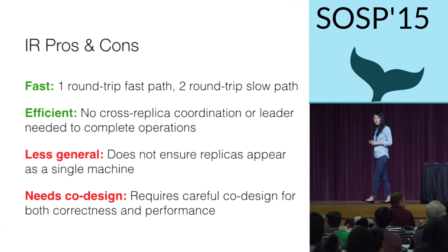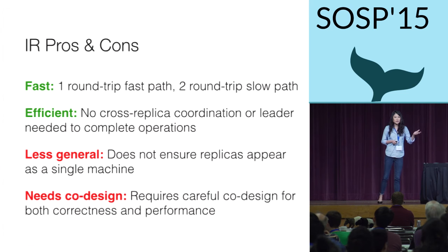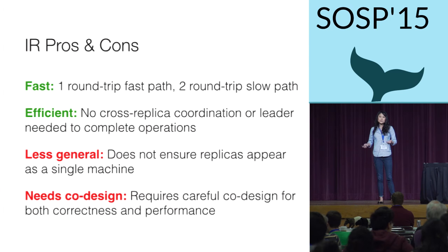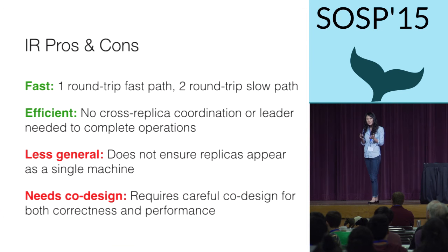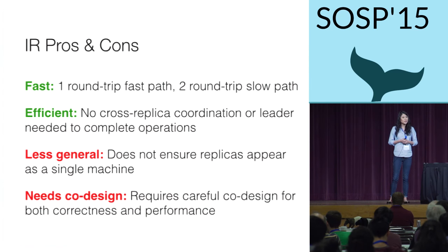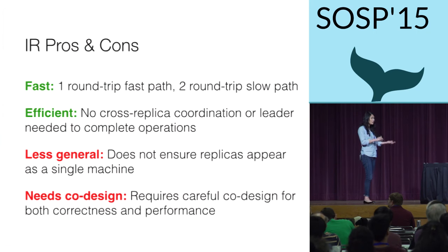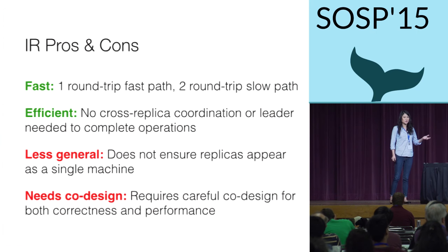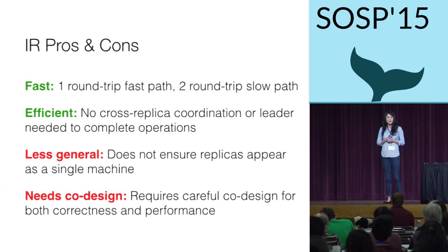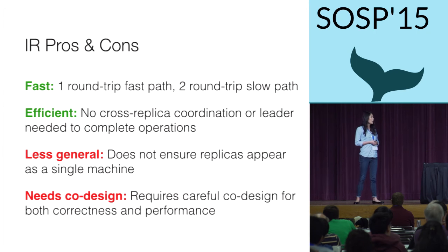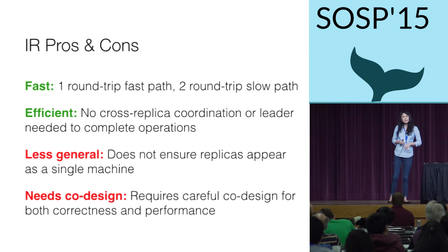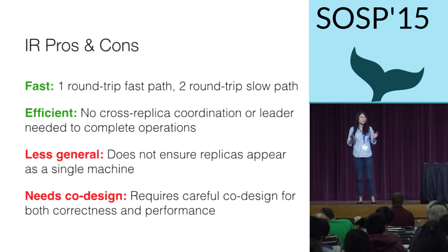Let's look at the pros and cons of this new protocol. The first pro is low latency: IR can complete an operation in a single round trip, and even its worst case is two round trips — the same as the common case for a strong replication protocol. IR doesn't require any coordination across replicas on operations, and it doesn't need a leader because it has no ordering. On the downside, IR is not as general as strong replication — you can't support state machine replication or a strongly ordered log. Any application layered on top of IR needs to be very carefully designed.